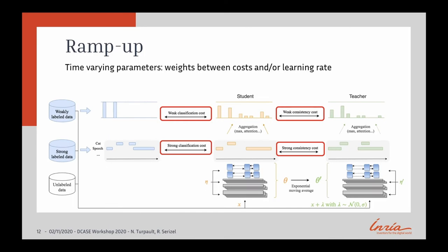Let's now talk about the ramp-up. The idea is to vary parameters during training — specifically the importance of each cost during the training process, or the learning rate. The concept is easy to understand for the consistency cost: at the beginning of training, neither the student nor the teacher model is well trained, so trying to enforce consistency between them is not very beneficial. If we wait some epochs while the student becomes better trained, the consistency becomes more beneficial for training. That's why we use a ramp-up.